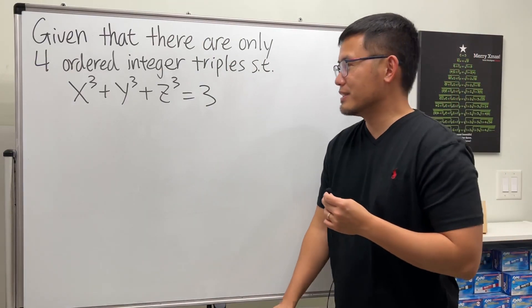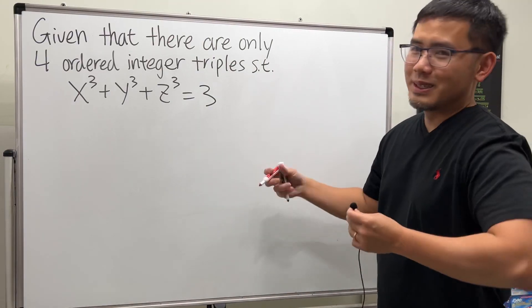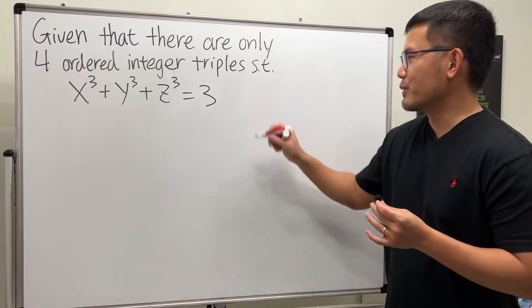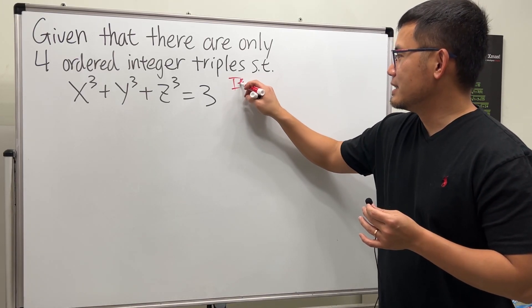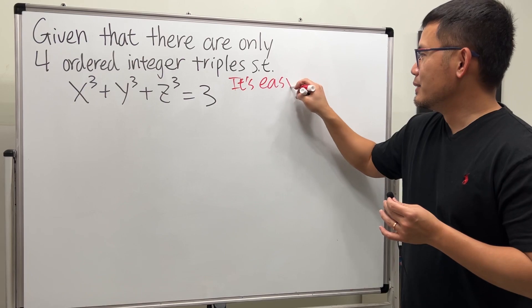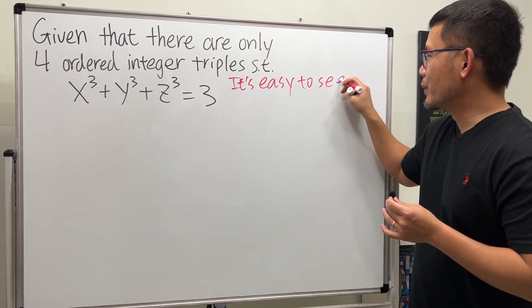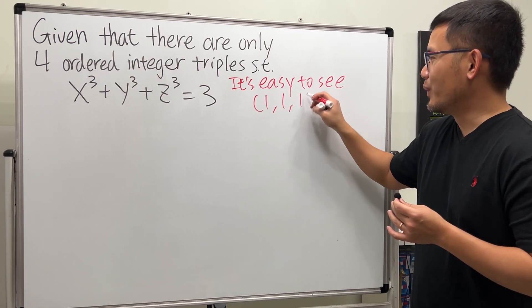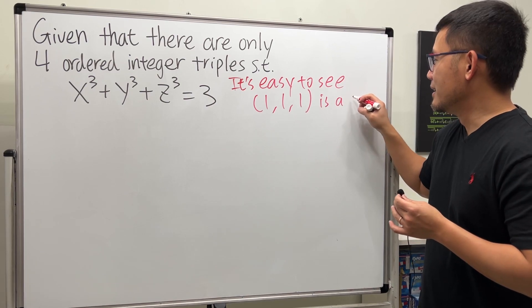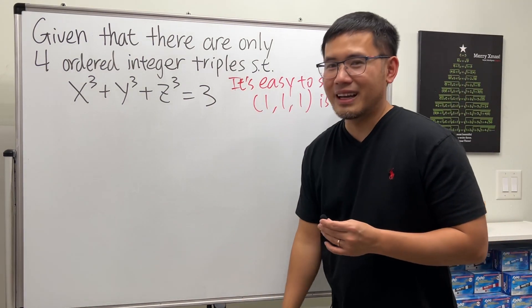So, let's do an easy one first. Here's how the typical textbook will tell you. I'll just write this down. It's easy to see (1, 1, 1) is a solution to this equation. So, done that.